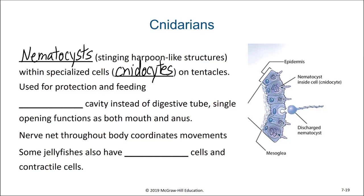Instead of having a complete digestive system or a digestive tube, cnidarians have a gastrovascular cavity. This gastrovascular cavity has a single opening that functions both as a mouth and an anus. These cnidarians don't quite have taste buds like we do, so it's not as disturbing a concept for them as it would be for us.